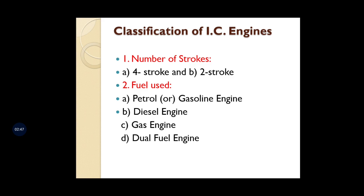IC engines are classified based on several parameters. The first classification is by number of strokes: four-stroke and two-stroke. A four-stroke engine requires four strokes — suction, compression, expansion, and exhaust — to produce energy and move a vehicle. A two-stroke engine requires only two strokes to produce mechanical energy.